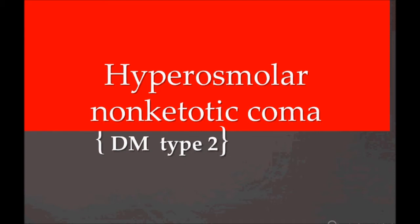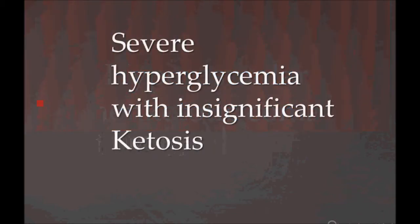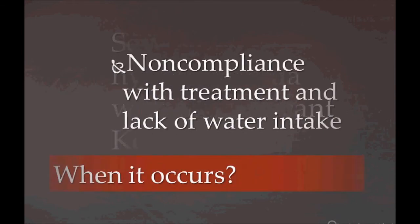HONK is seen in patients whose past history will be Type 2 diabetes. Whenever you see HONK, think of Type 2 diabetes. The patient will have severe hyperglycemia with insignificant ketosis — this is very important. The ketosis is not at the level you see in Diabetic Ketoacidosis (DKA).